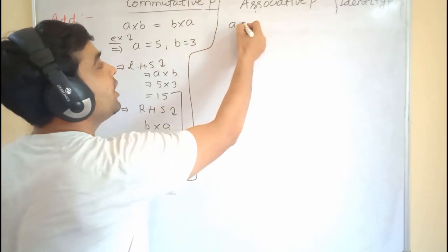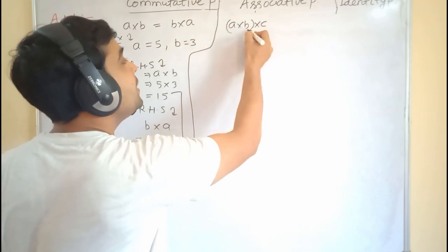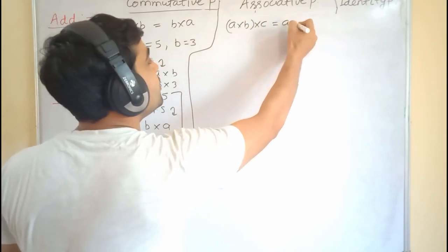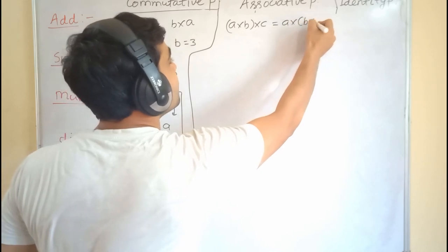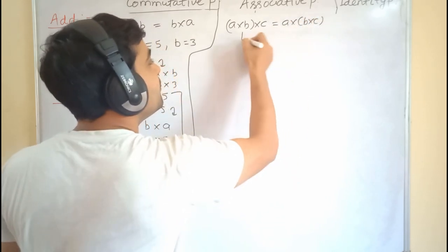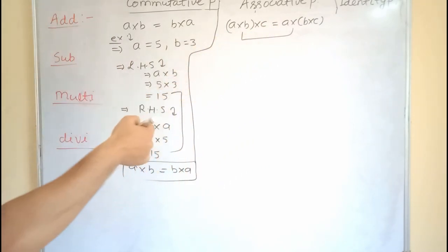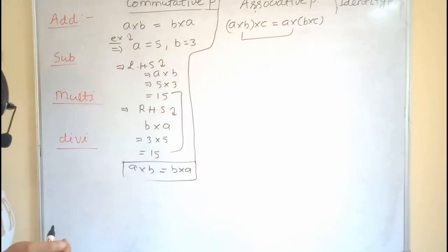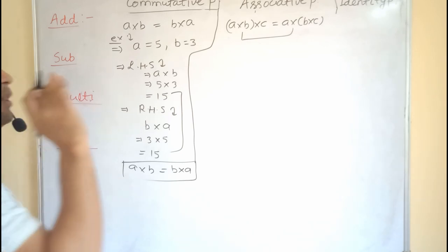According to associative property: (a into b) into c must be equal to a into (b into c). We first associate a with b, then associate that result with c, or we associate b with c first then with a. If both sides are equal, multiplication follows associative property; if not, it does not. We will check it by example.